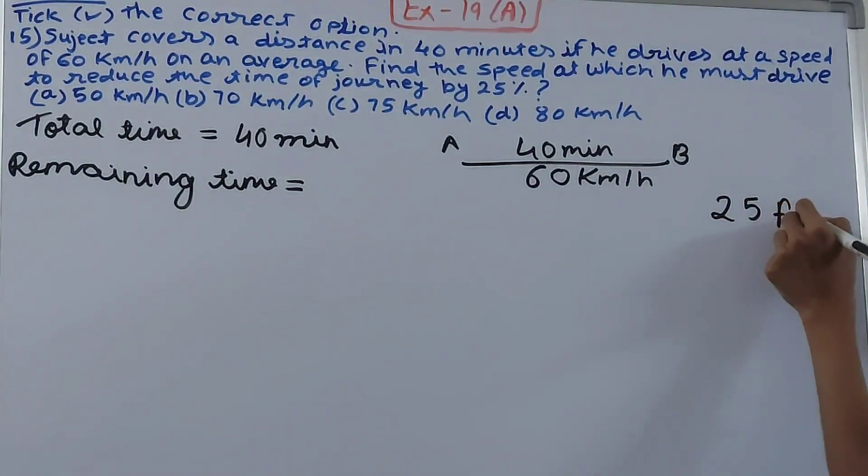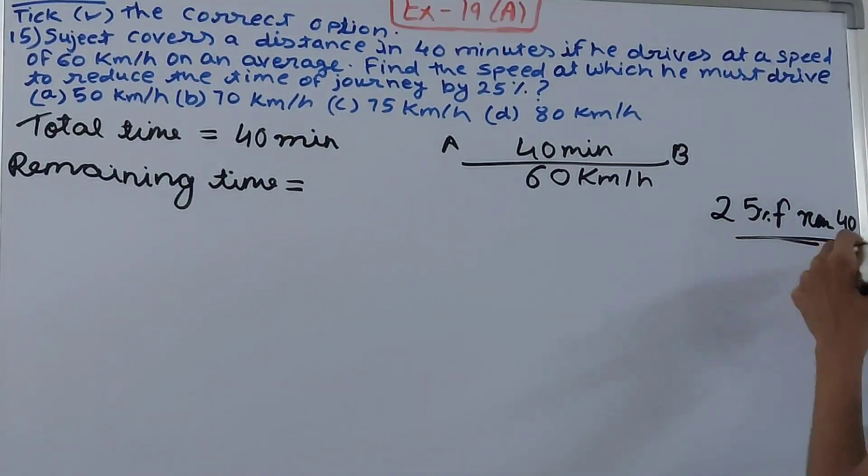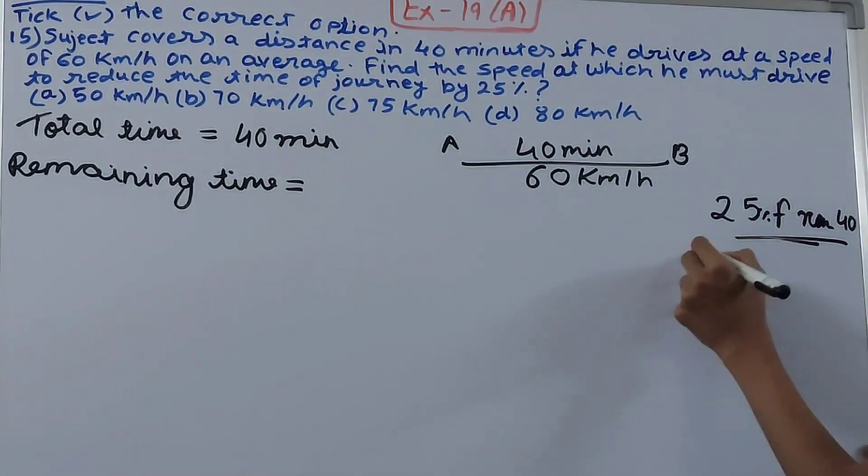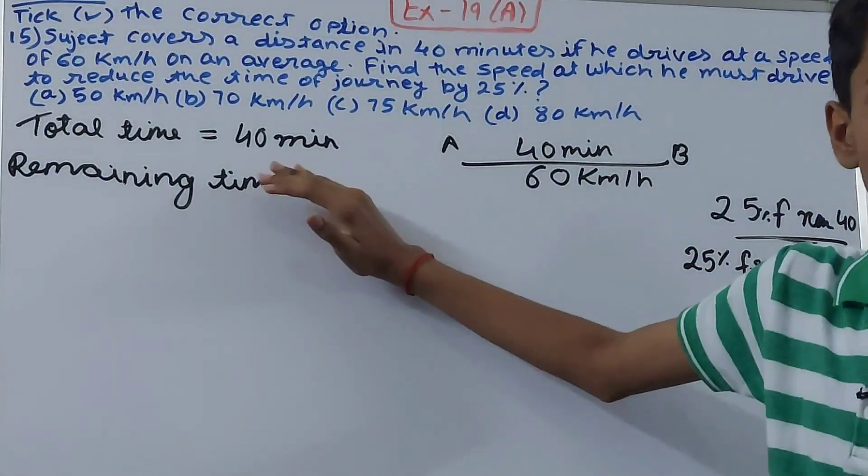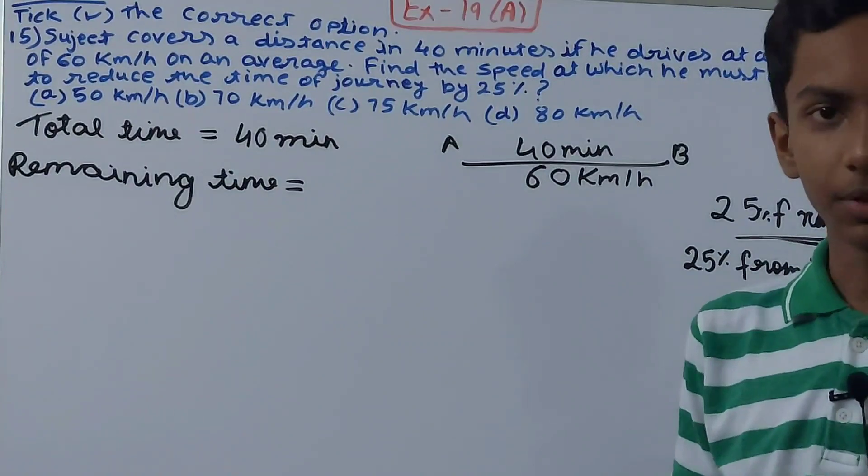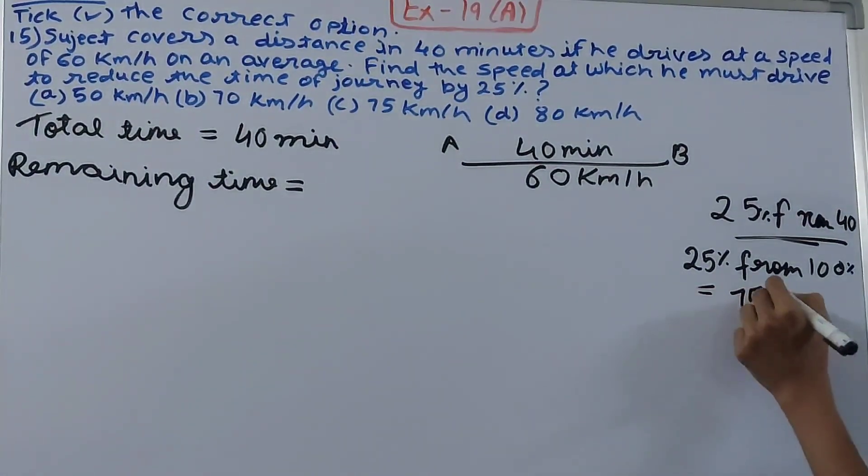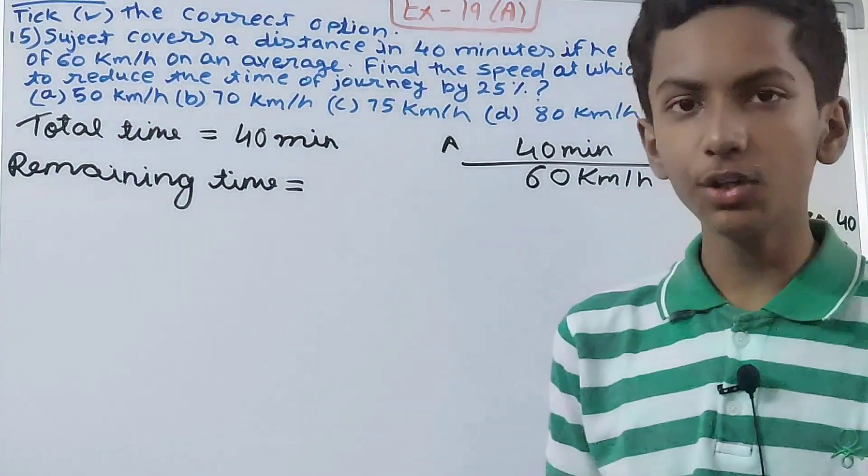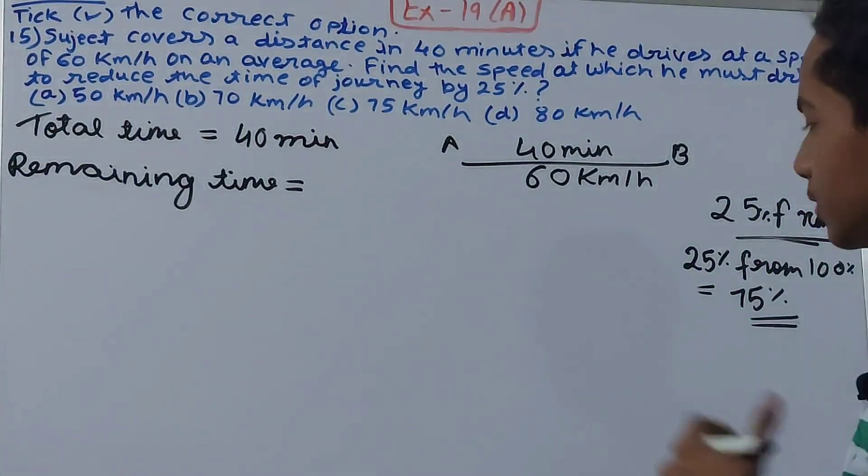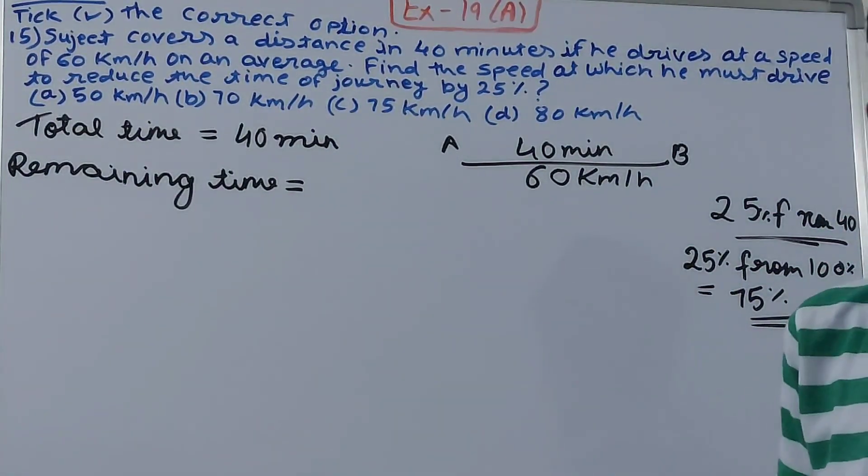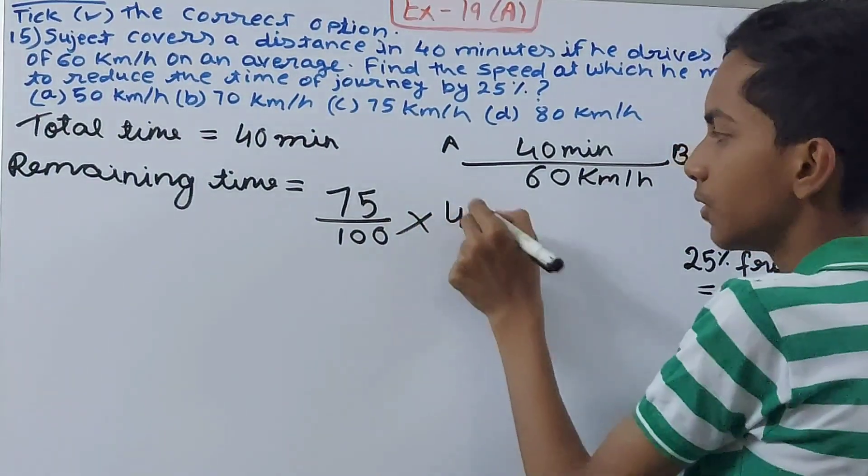We are going to subtract 25 percent from 40 minutes, or basically subtract 25 percentage from 100 percent, because our total time is 40 minutes and the total is always 100 percent. From 100 percent we subtract 25, so we are left with 75 percent. That means the remaining time will be 75 percent of 40 minutes, or the other way you can simply find 25 percent of 40 minutes and subtract it from 40 minutes. To shorten the process, this is the smarter way.